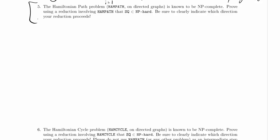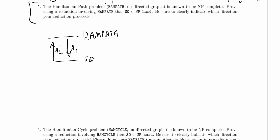We want to prove using a reduction that SQ is NP-hard, so we want to reduce from a problem that is already known to be NP-hard. We're being told to use HAMPATH to SQ, and we need to provide both algorithm 1 and algorithm 2. Remember both of those algorithms are part of the reduction. However, algorithm 2 is easy — whatever answer we get back from SQ, we give that answer back for HAMPATH: yes if and only if yes.